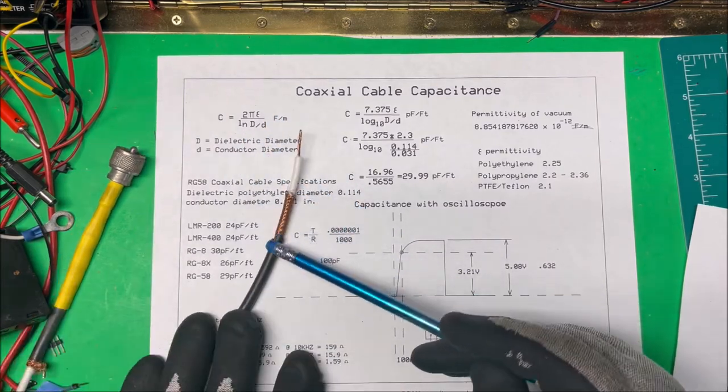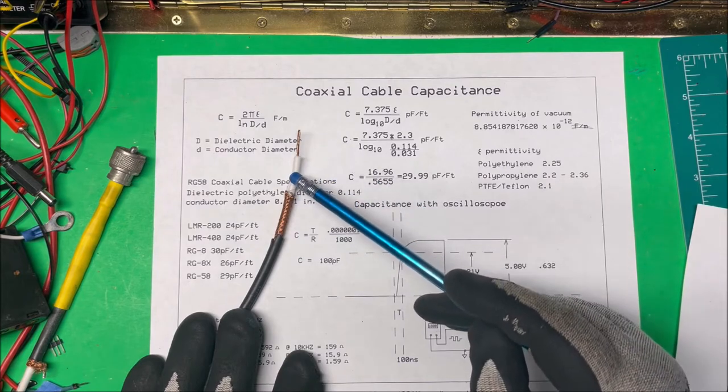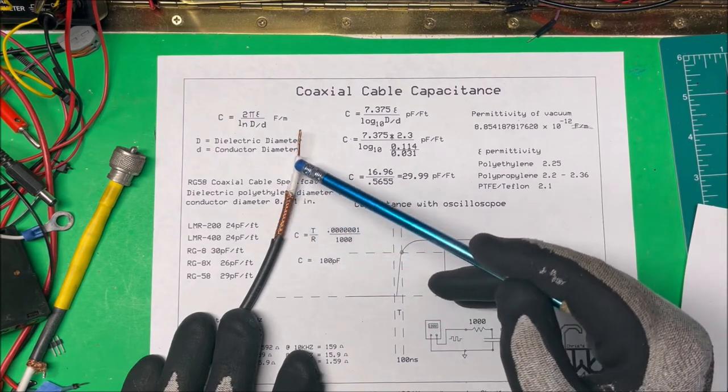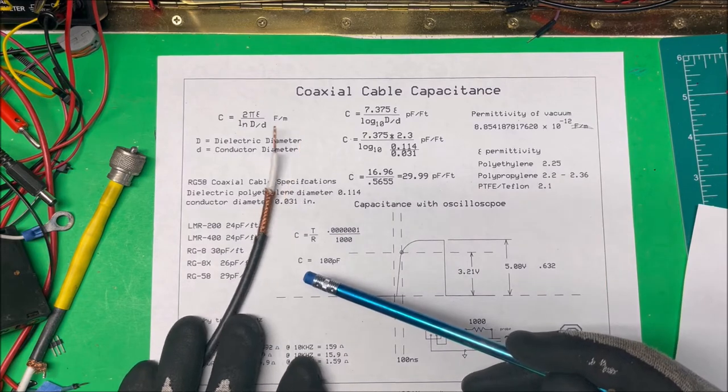Here's a piece of coax here. This is your conductor, this is your dielectric. You have two metals separated by a dielectric, yet it forms a capacitor.